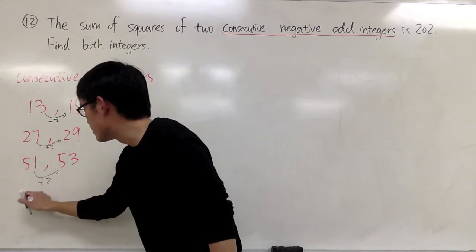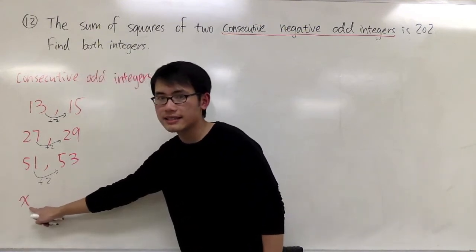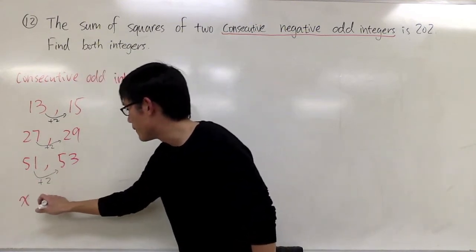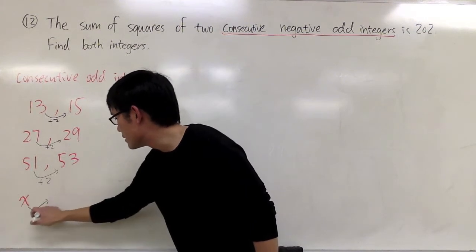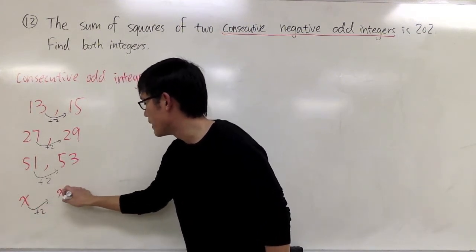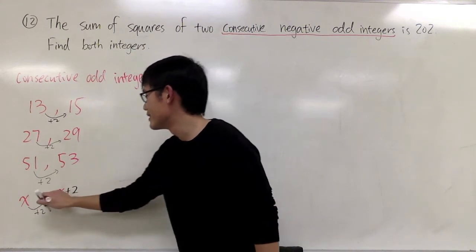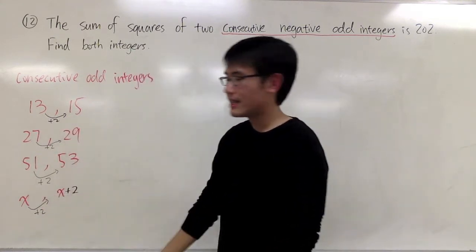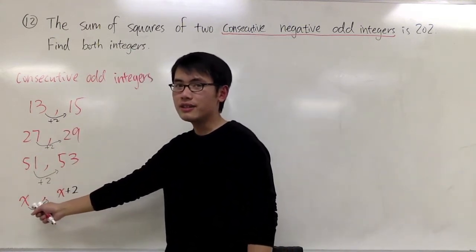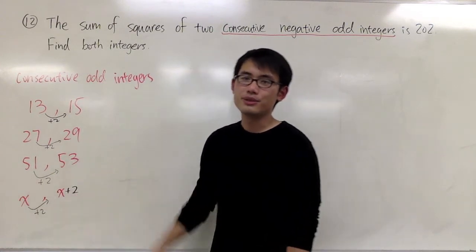And if I ever start with my first odd integer as x, then the next one will be, I have to just add to it, it will be x plus 2. Just like that. x is the first odd integer, and the next one will be x plus 2.